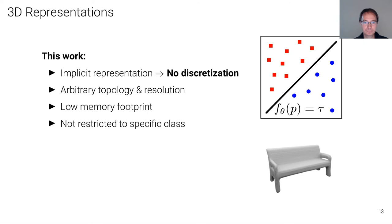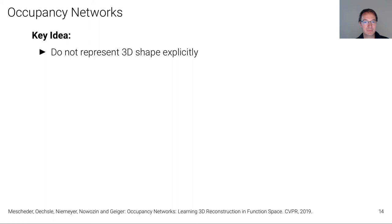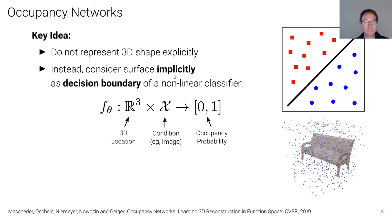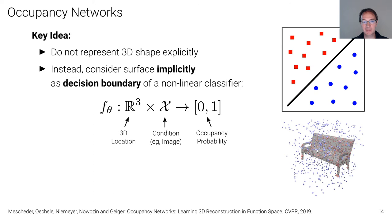The key idea is very simple. Instead of representing the 3D shape explicitly, we consider the surface of the object implicitly as the decision boundary of a non-linear classifier. This neural network with parameters theta takes as input a 3D location — three coordinates — and a condition vector, such as a 128-dimensional image encoding, and outputs an occupancy probability, classifying whether a point is inside or outside the object. The red points are classified as inside and the blue points as outside, with inside points having occupancy probability close to 1 and outside points close to 0.